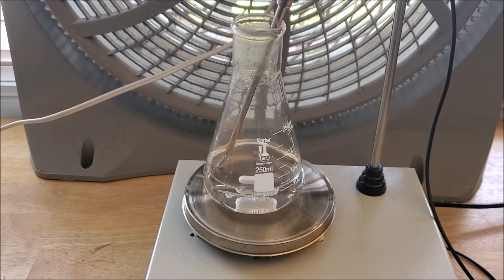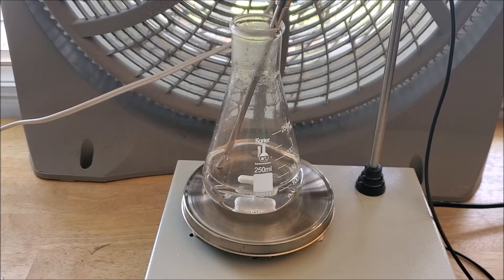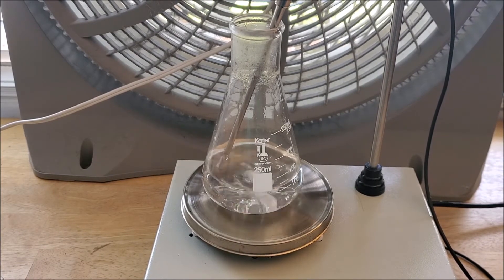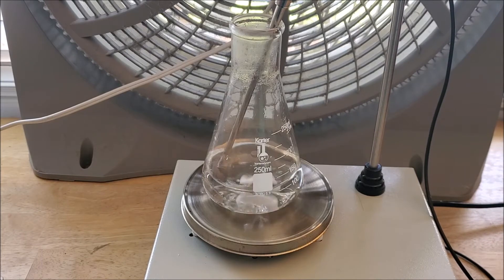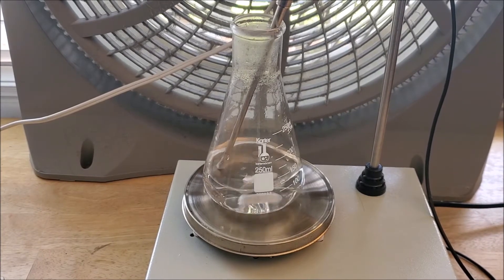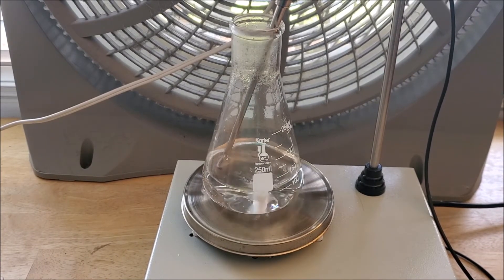All right, first things first, we're gonna want to add 100 milliliters of distilled water to a 250 milliliter Erlenmeyer flask. Next thing you're gonna want to do is you're gonna want to add 2.8 grams of the chromium-3 chloride to the distilled water.